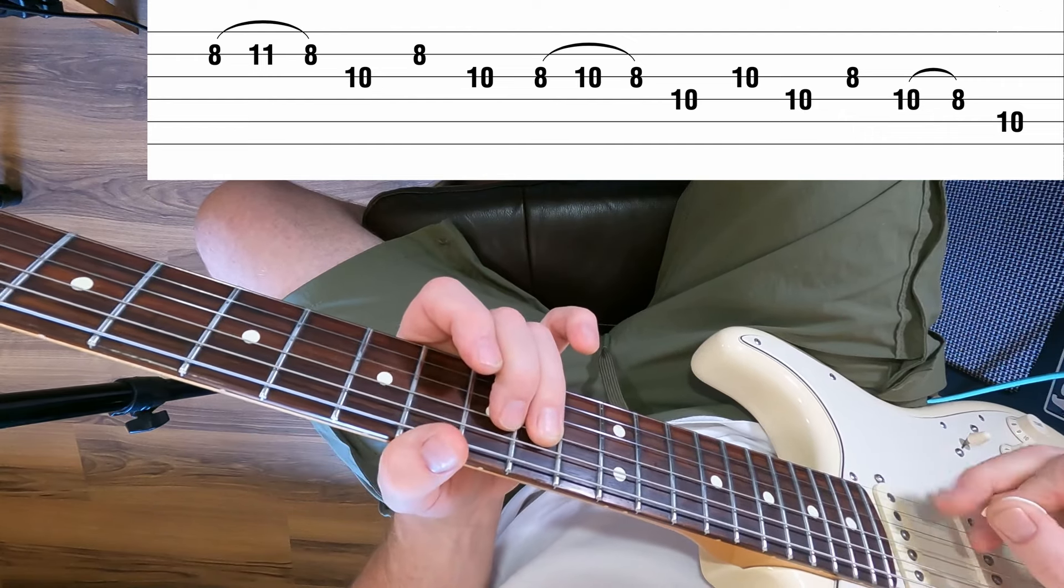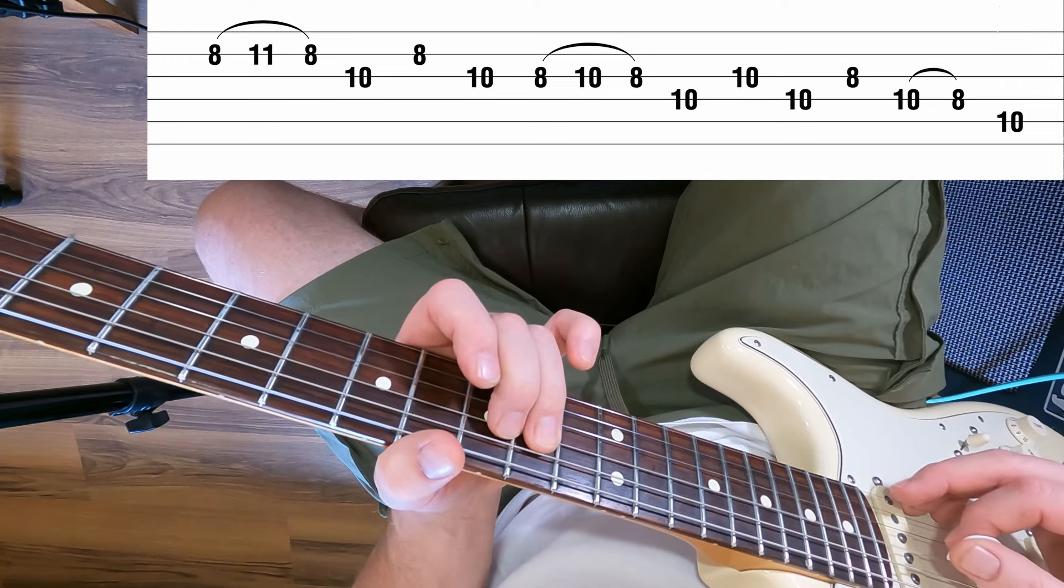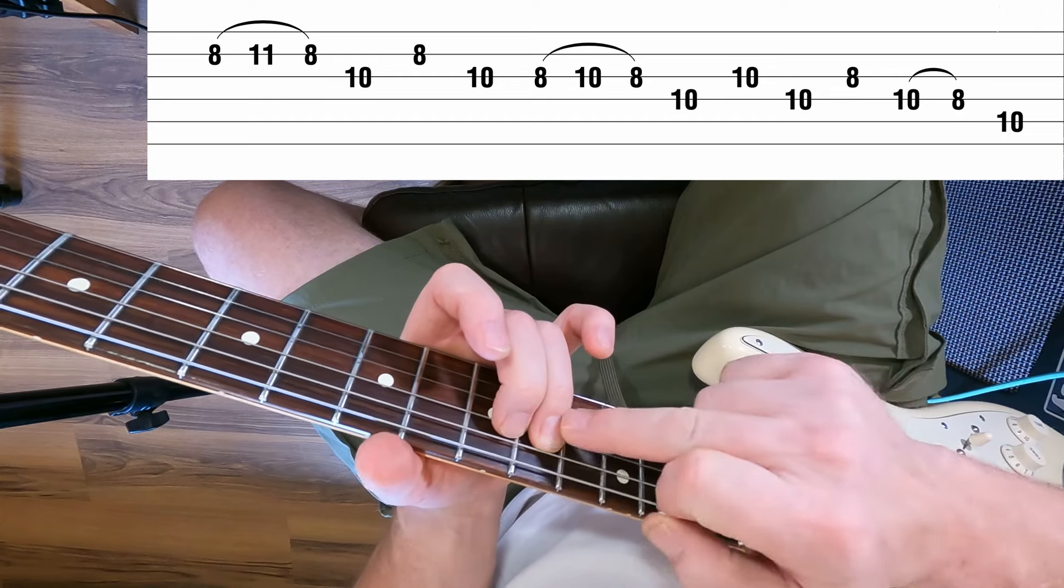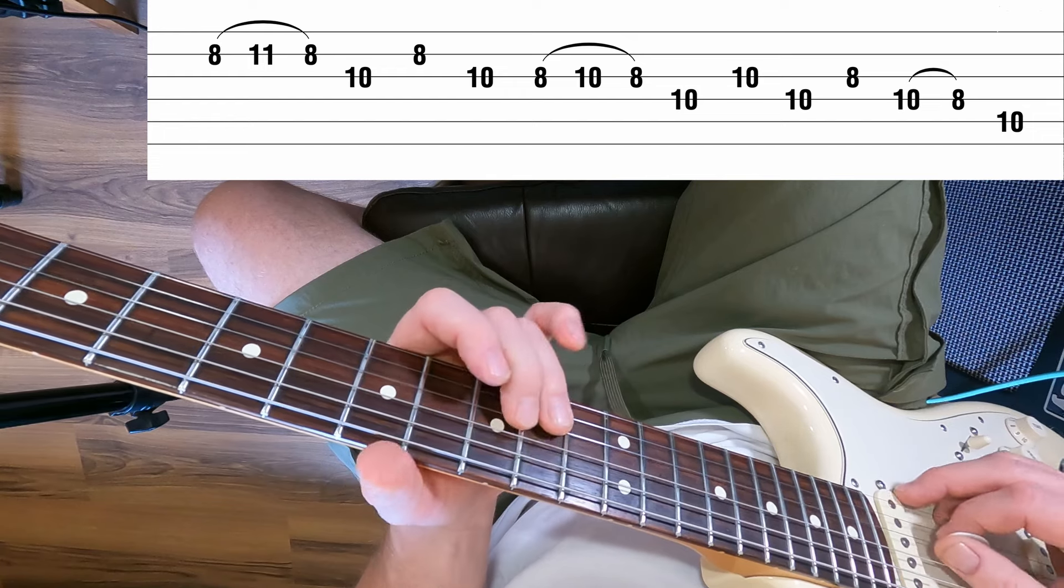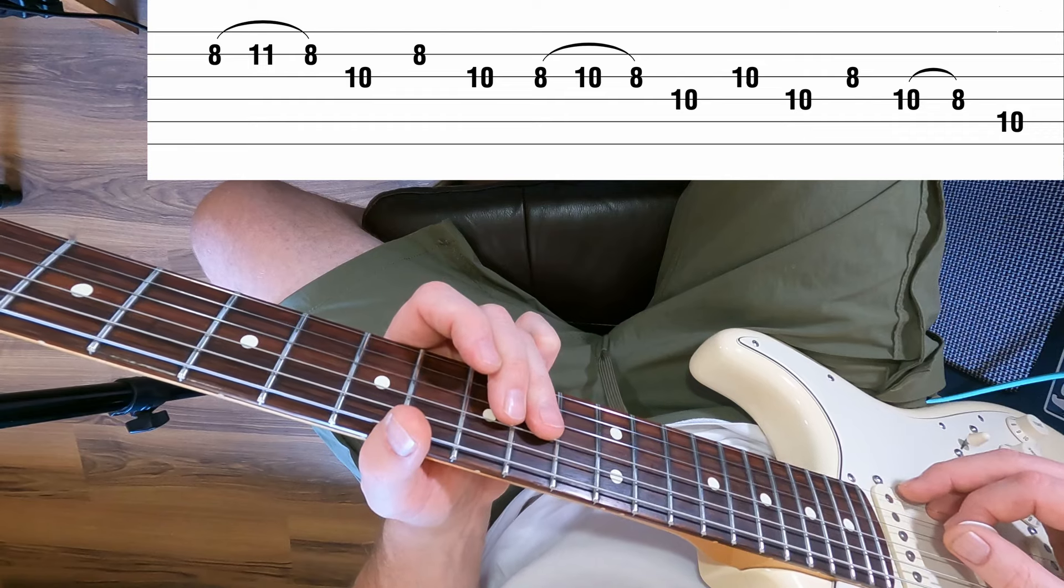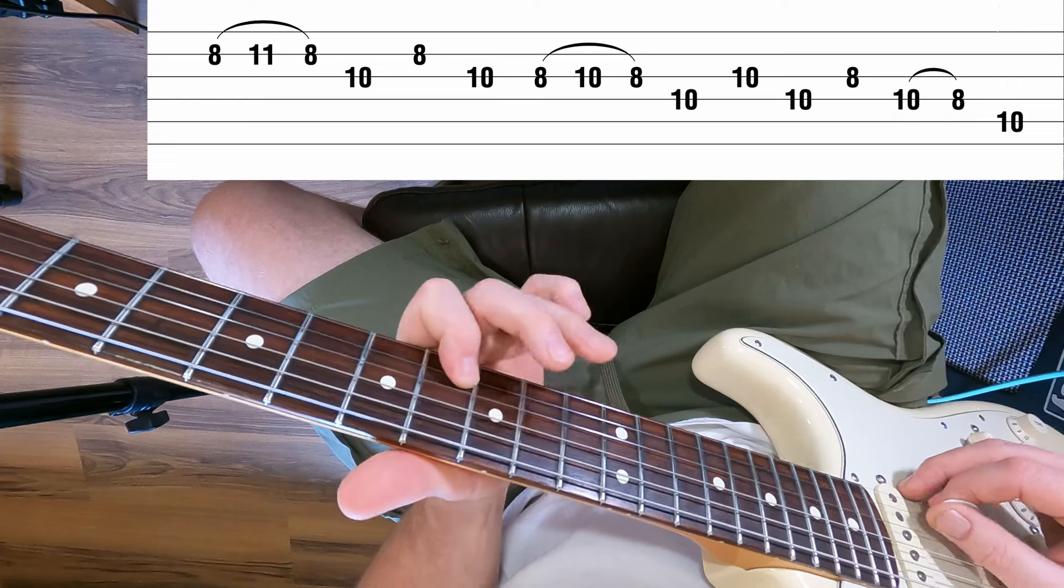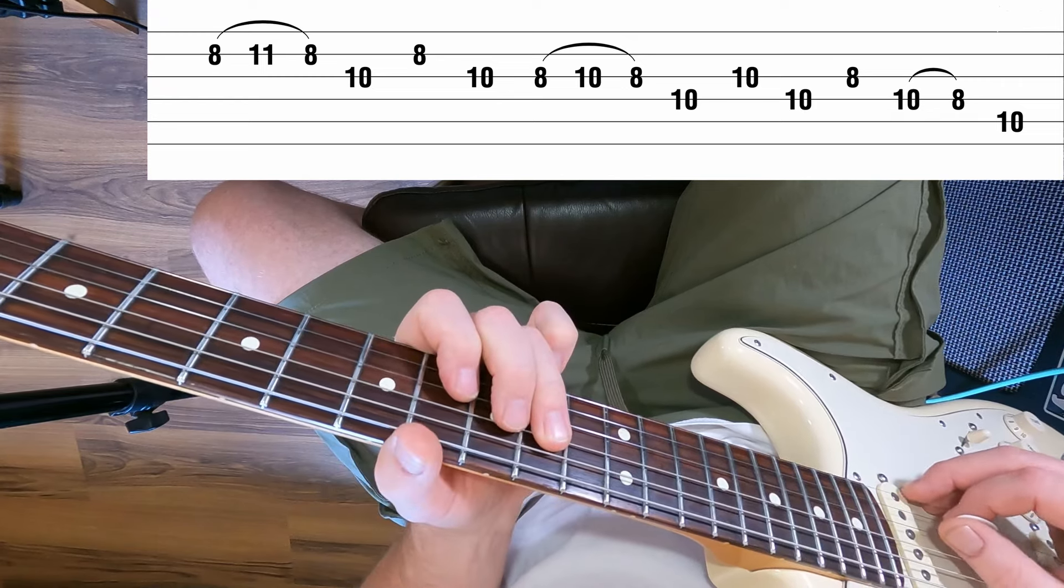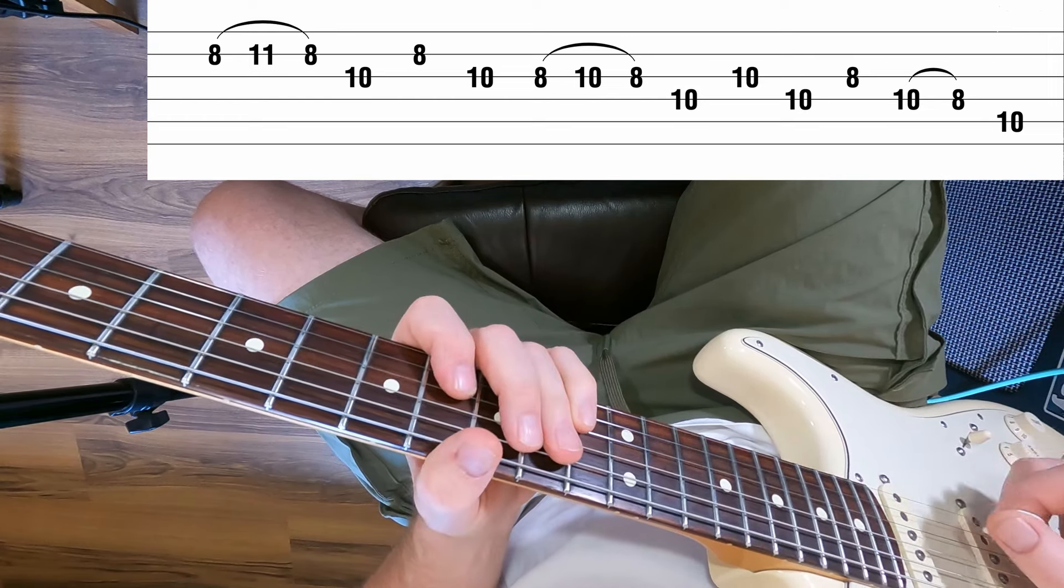When we get to that 10th fret on the D, which is our root, our pick should be facing upwards, we should be on an up pick. You've just done that root with an up pick, then we're going to straightaway stack this note. I'm going to get the G string also on the 10th fret with a down pick, then come back up to the 10th again, so it's three times.